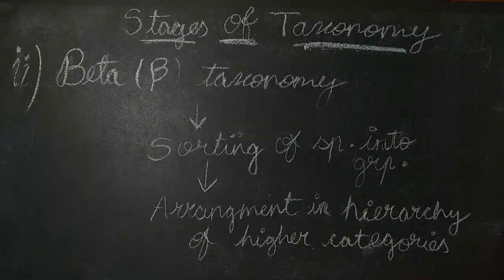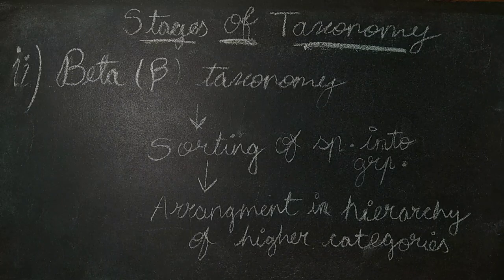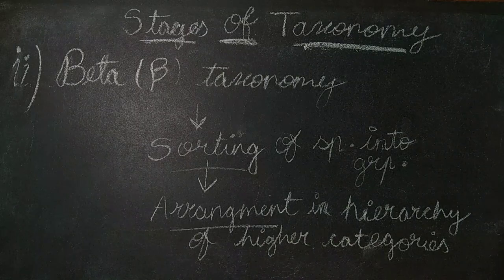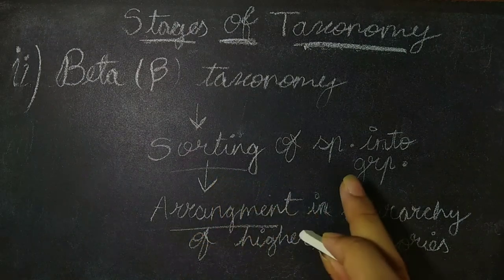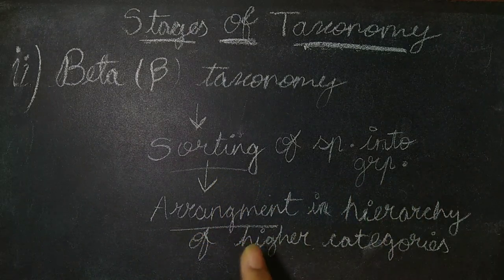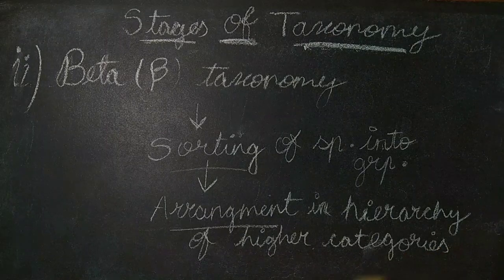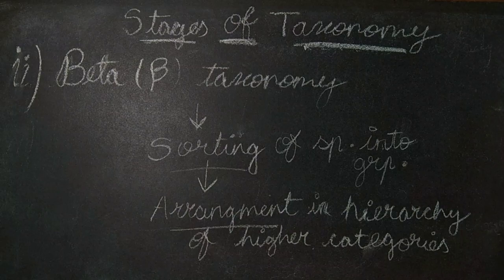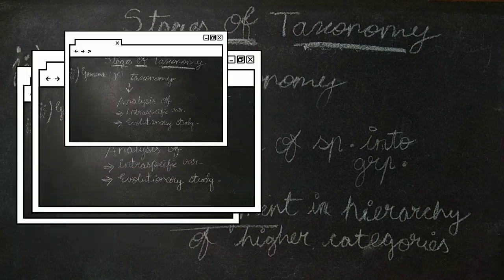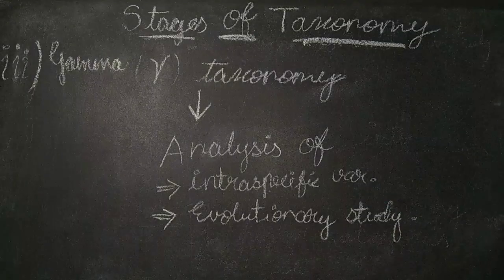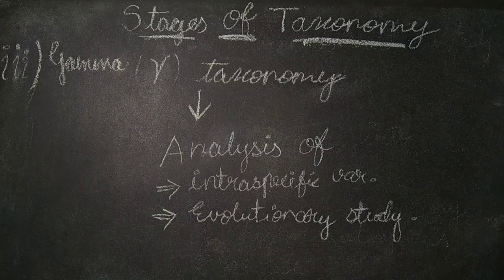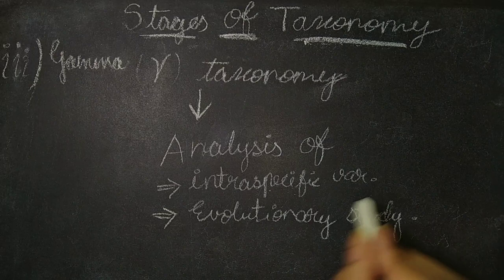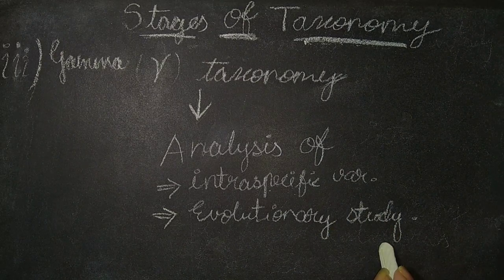The second is beta taxonomy. In beta taxonomy, sorting and arrangement is done. Sorting of the species into groups and arrangement in hierarchy of higher categories. The third is gamma taxonomy. In gamma taxonomy, analysis is done of intraspecific variation and evolutionary history, for example the study of speciation.